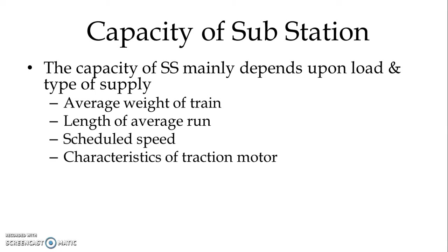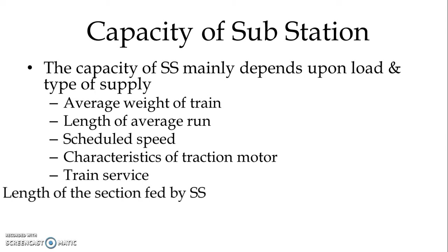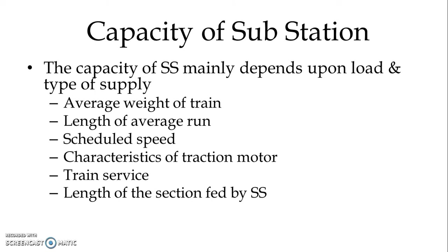Other capacity factors include: length of average run, speed, characteristics of traction motor, train service frequency of run, length of section fed by the substation, and the nature of the track route — that is, whether gradient or curvature needs to be considered.